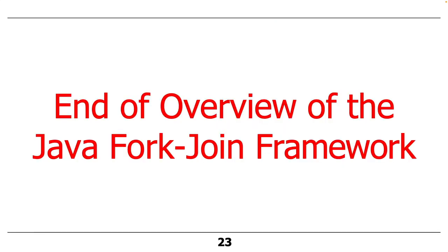That's the end of the overview of the Java fork/join framework. Needless to say there's a lot more to it, but that gives you at least a high-level view of what's taking place.